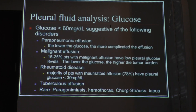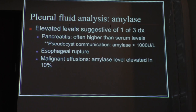Regarding glucose: when you have very decreased glucose, you think about parapneumonic effusions, malignant effusions, or rheumatoid disease — that's the reason why we send a rheumatoid factor. And these are very rare causes of low glucose: lupus and Churg-Strauss as well.